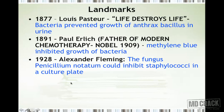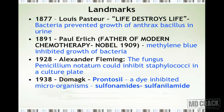In 1928, Alexander Fleming showed that the fungus Penicillium notatum could inhibit staphylococci in a culture plate — a microorganism inhibiting a bacterium. Then in 1938, a scientist named Domagk showed that prontosil, also a dye, inhibited microorganisms. From prontosil, compounds were prepared that we call today sulfonamides or sulfa drugs. The first was sulfanilamide — the first antimicrobial agent in the world, in 1938, from a chemical rather than a microorganism source.